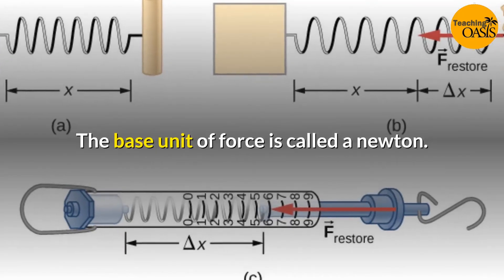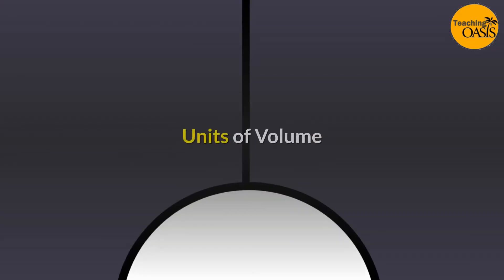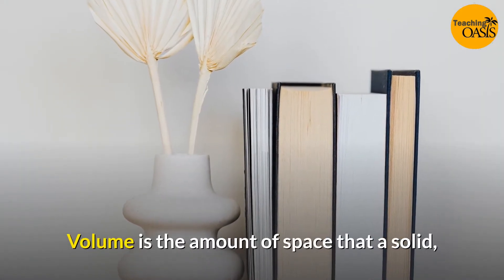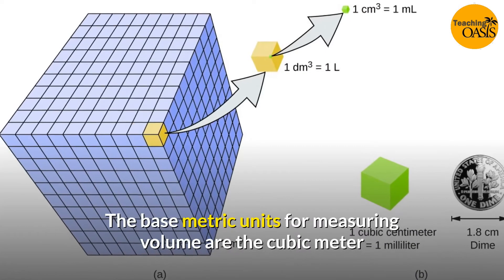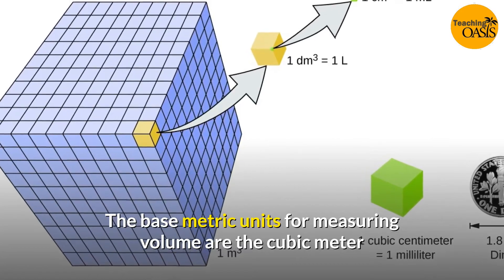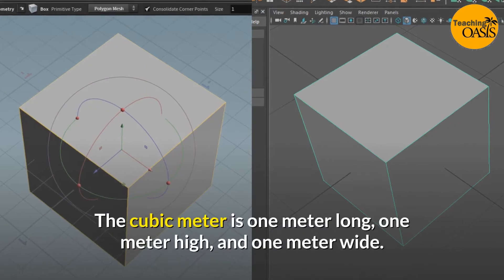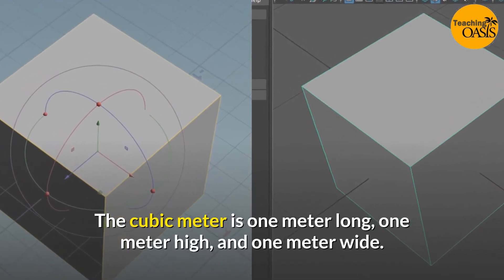More measuring units - Volume: Volume is the amount of space that a solid, liquid, or gas takes up. The base metric units for measuring volume are the cubic meter and the liter. The cubic meter is one meter long, one meter high, and one meter wide. The liter is the base unit often used to measure the volume of liquids.